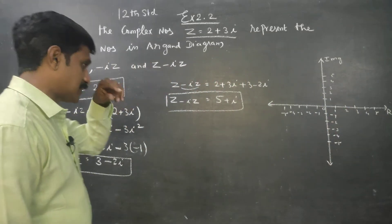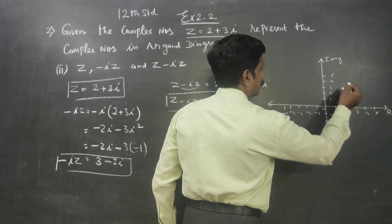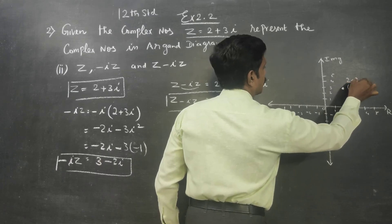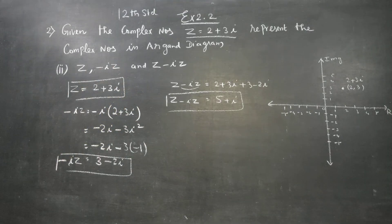First point is 2 plus 3i. 2, 3—this is my point. It can be represented as (2, 3) or 2 plus 3i, a complex number, that coordinate (2, 3).